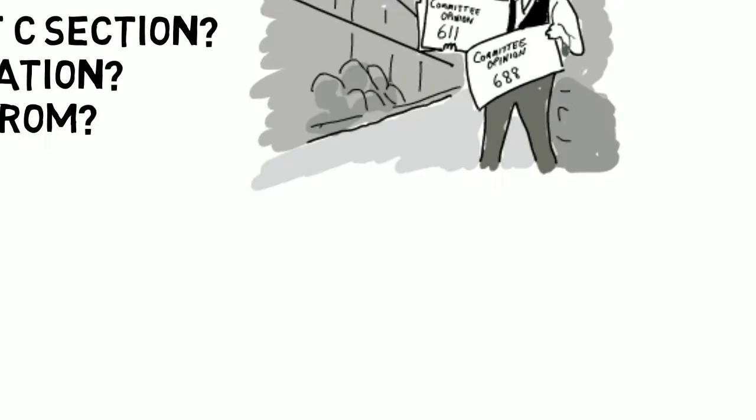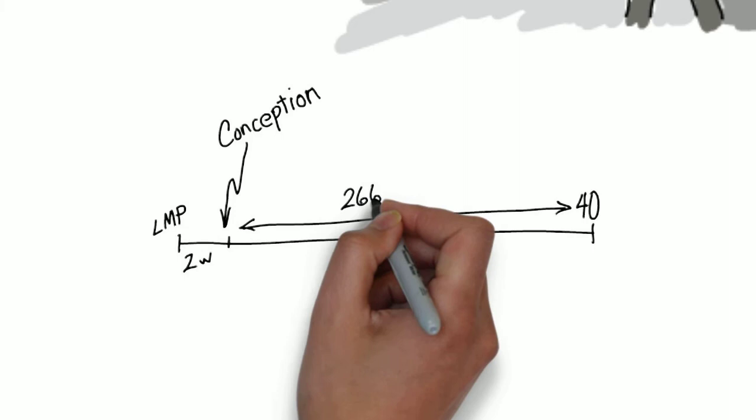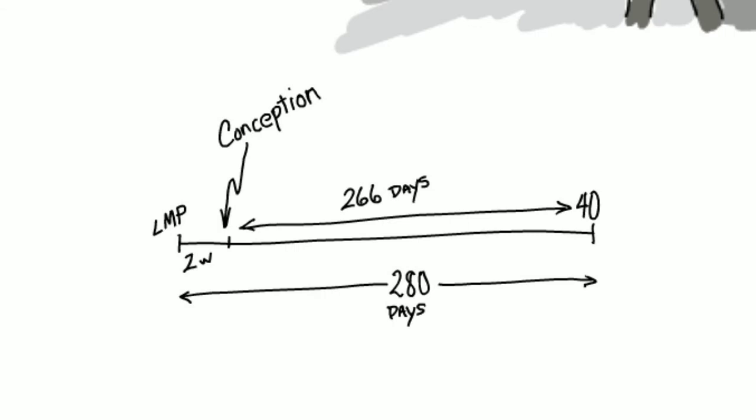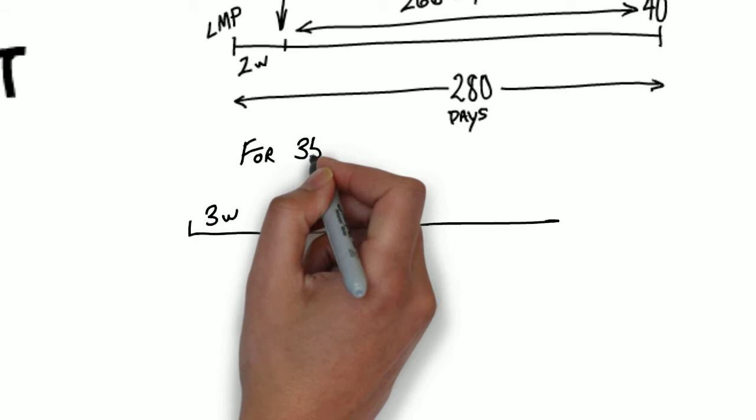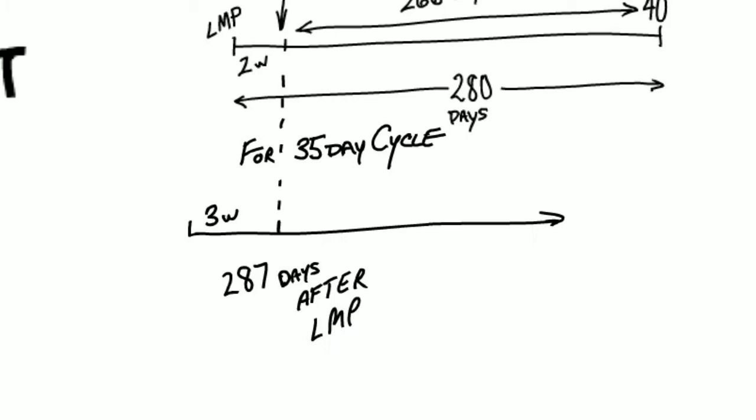Dating the pregnancy typically begins by ascertaining the first day of the last period. Adding 280 days to that assumes that a woman with regular 28-day cycles probably ovulated and conceived 14 days after that. A history of longer cycles, like 35 days, suggests she ovulated and got pregnant on day 21. Since the luteal phase after ovulation is consistently 14 days in most people, therefore, 7 days should be added to the EDC.